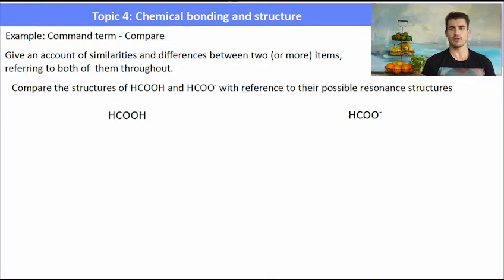An important command term for IB chemistry is compare, where we need to give an account of the similarities and differences between two or more things. Compare the structures of methanoic acid and the methanoate ion in terms of their possible resonance structures.